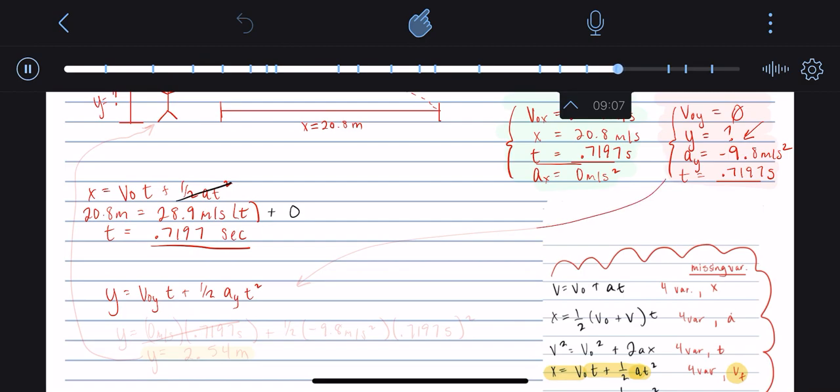Go ahead and plug in your y values into this equation. So we're going to be solving for y, so it's going to be y equals, our velocity initial in the y dimension is zero meters per second, our time, which we already solved for, it's going to now be 0.7197 seconds plus one half, our acceleration in the y dimension is going to be negative 9.8 meters per second squared, and then we have our time again, 0.7197 seconds, and this term is squared.